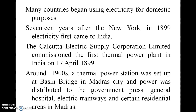The Kolkata Electric Supply Corporation Limited commissioned the first thermal power plant in India on the 17th of April, 1899. Around the 1890s, a thermal power station was set up at Basin Bridge in Madras city, and power was distributed to the government press, general hospital, electric tramways, and certain residential areas in Madras.